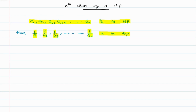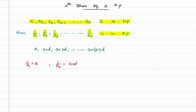Now let's take a simple arithmetic progression with first term a and common difference d. That arithmetic progression will be: a, a+d, a+2d, and so on up to a+(n−1)d. Now if we compare the terms of these two arithmetic progressions, then we will have 1/a1 = a, 1/a2 = a+d, and so on up to 1/an = a+(n−1)d.